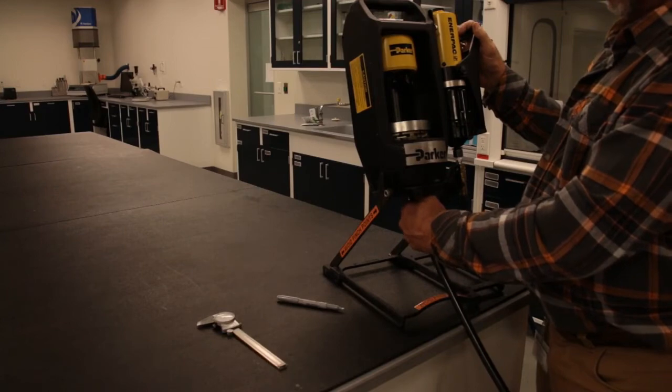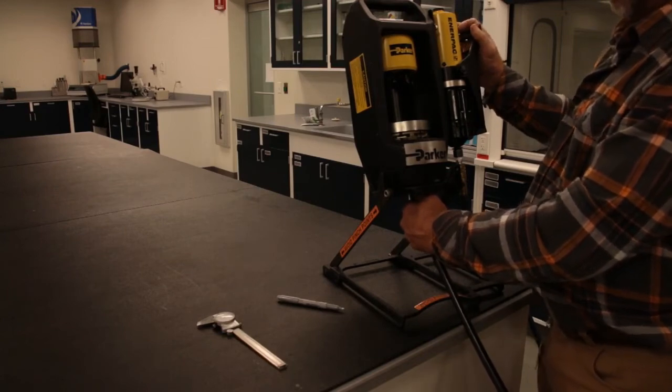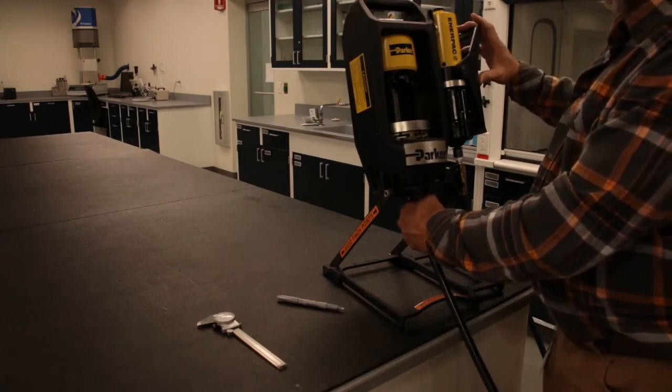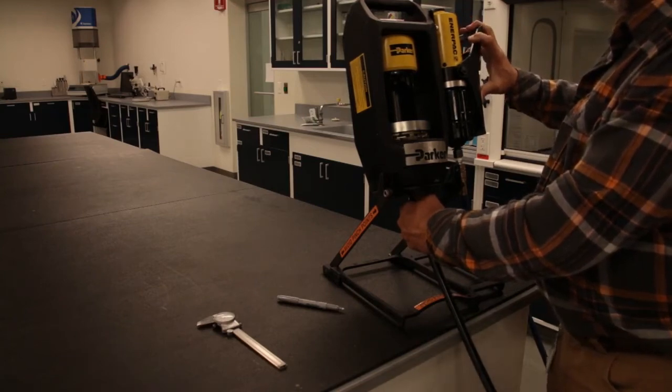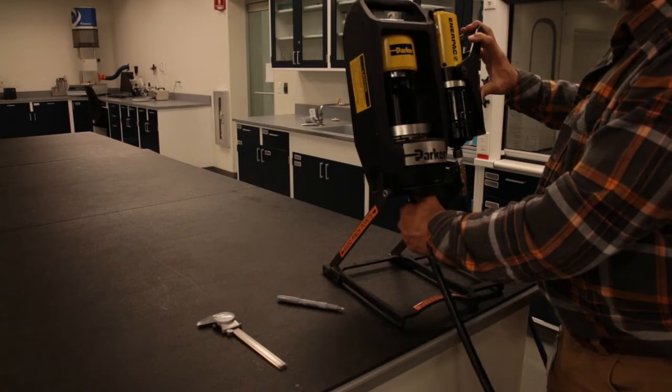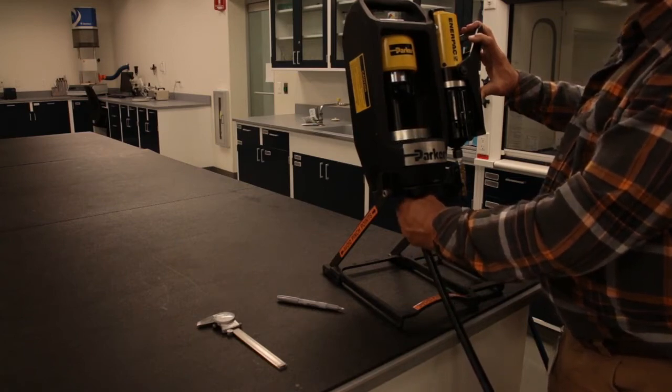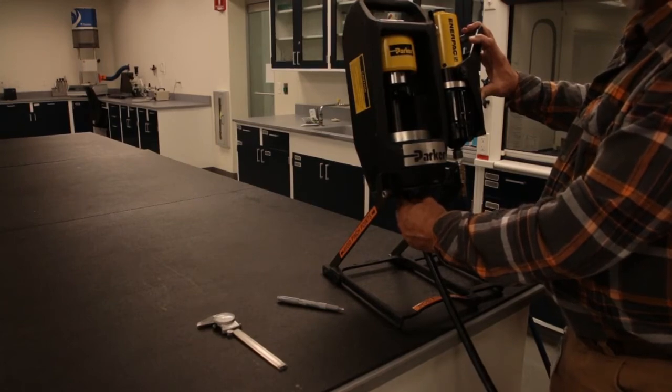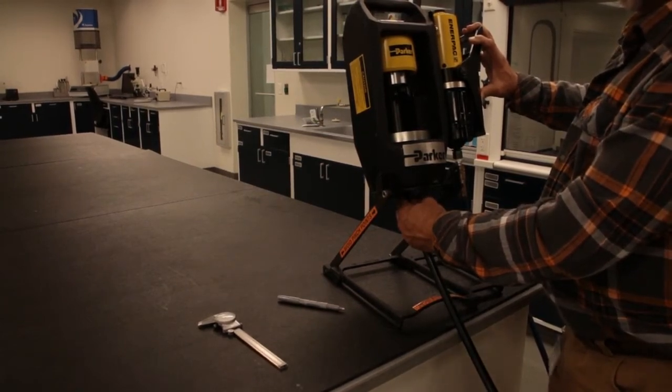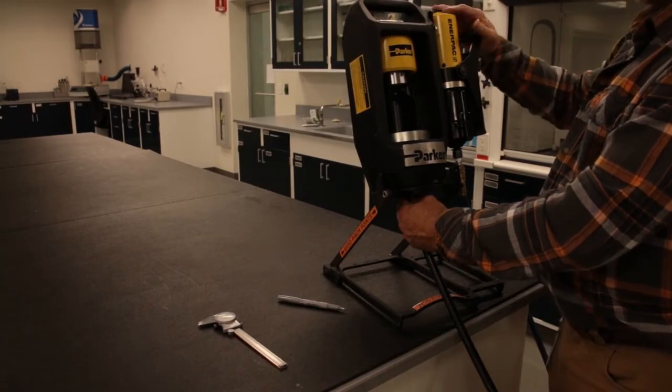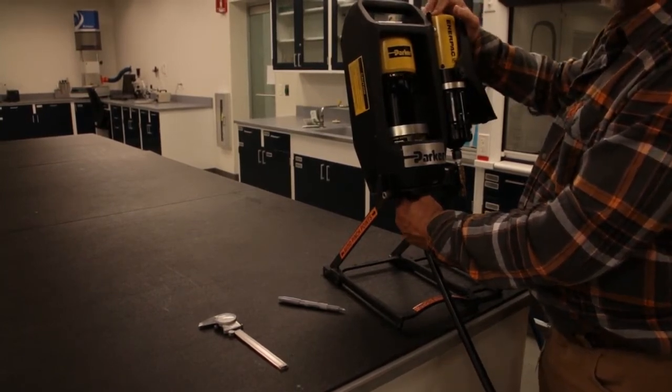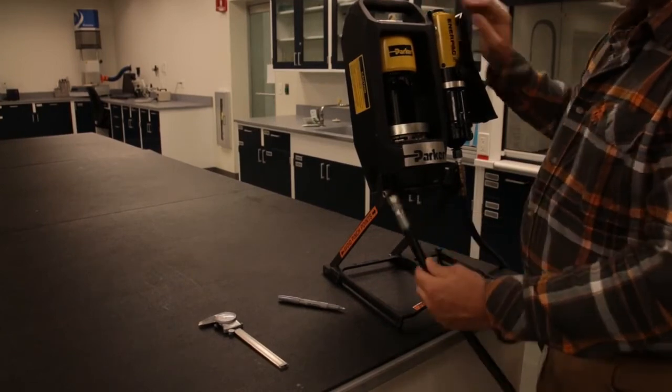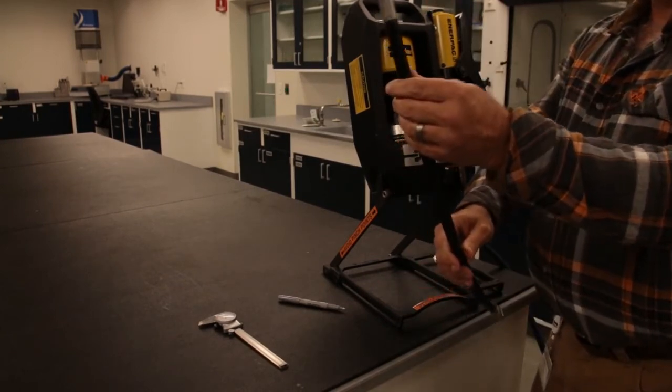Once the fitting is properly rested on the Parker line step, begin to crimp the fitting and continue to apply pressure to the crimp until the die ring bottoms out on the crimper. You'll want to do the same step on the other side of the hose.